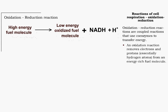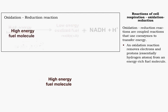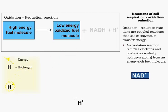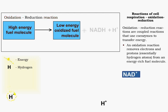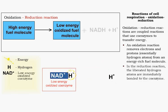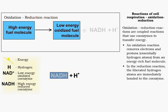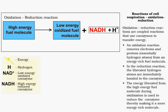Oxidation-reduction reactions are coupled reactions that use coenzymes to liberate and transfer energy from high-energy fuel molecules to reduced coenzymes. Oxidation reactions liberate energy in the form of hydrogen atoms from high-energy fuel molecules. Using a coenzyme like NAD+, reduction reactions transfer the liberated energy to the reduced coenzyme NADH. As a result of oxidation and reduction reactions working together, the reduced coenzymes now carry the energy that was once in the fuel molecule.